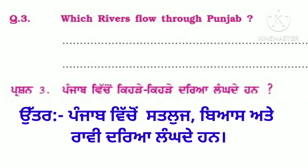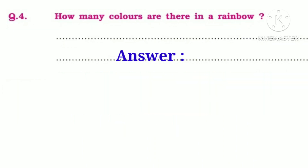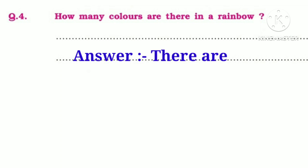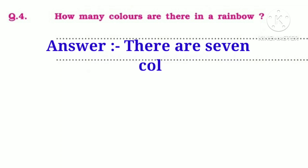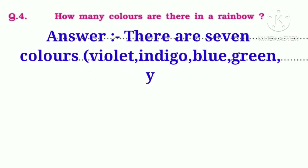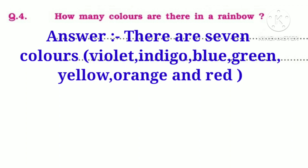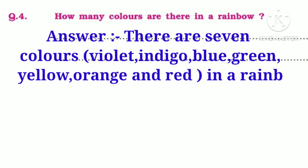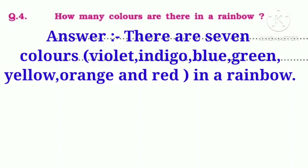How many colors are there in a rainbow? Answer: There are seven colors — Violet, Indigo, Blue, Green, Yellow, Orange and Red — in a rainbow.